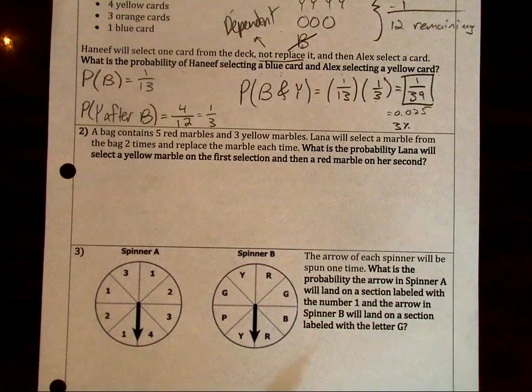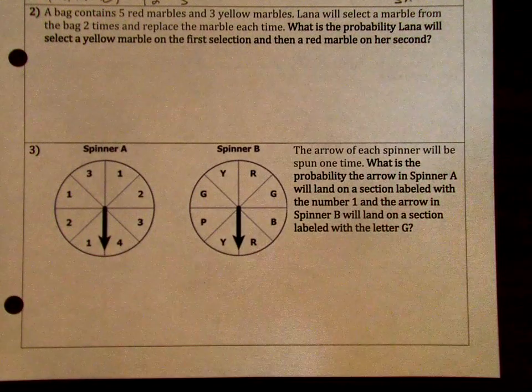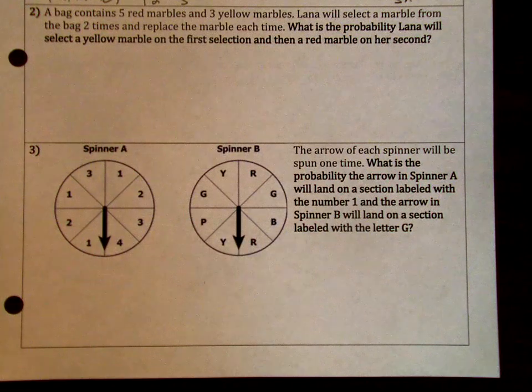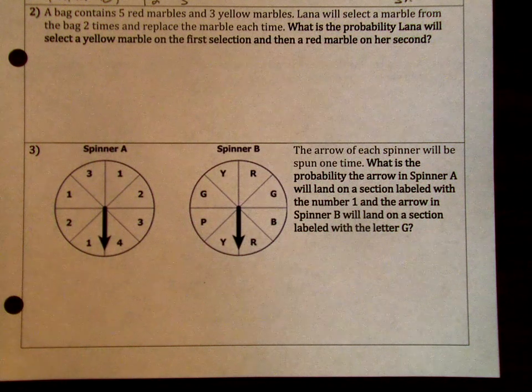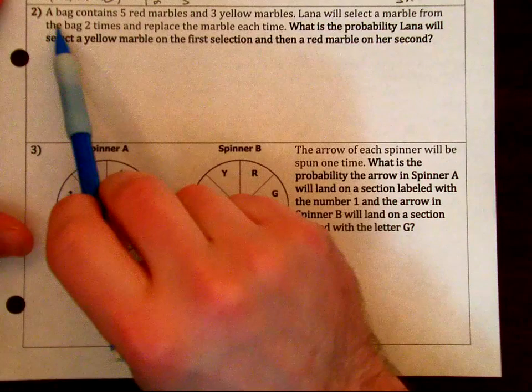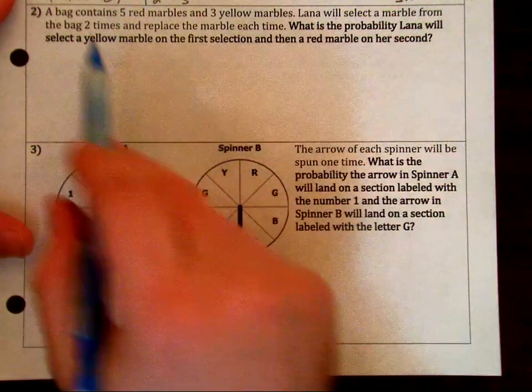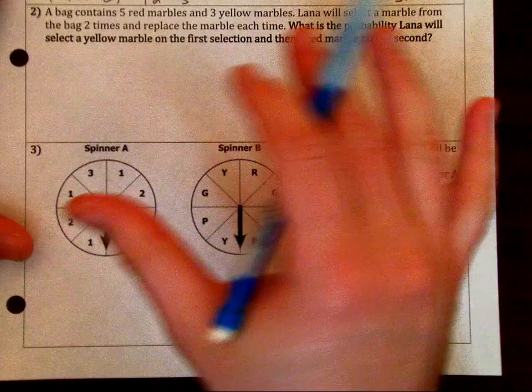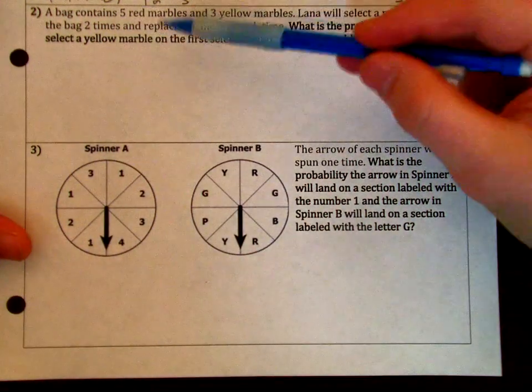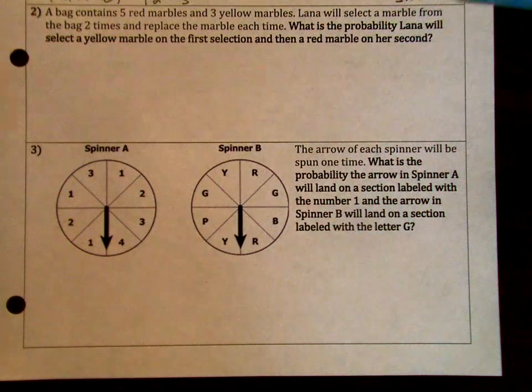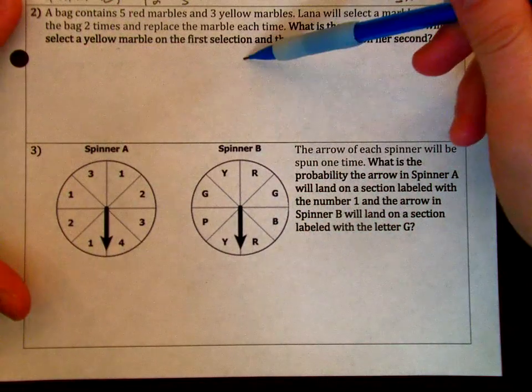Alright, at any point in time you can pause, rewind, replay, slow motion, fast motion, whatever it may be. But at least make sure you can hear me for yourself. So now for the second one, it says a bag contains five red marbles and three yellow marbles. Lana will select a marble from the bag two times. Make sure you're thinking each time you take an event, it's just one at a time.